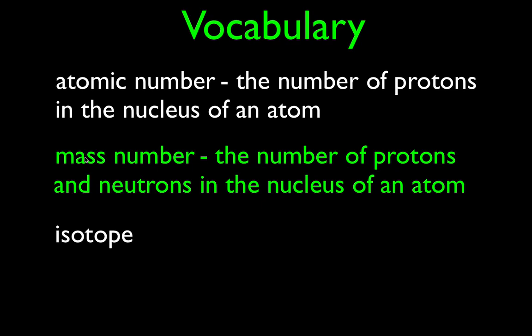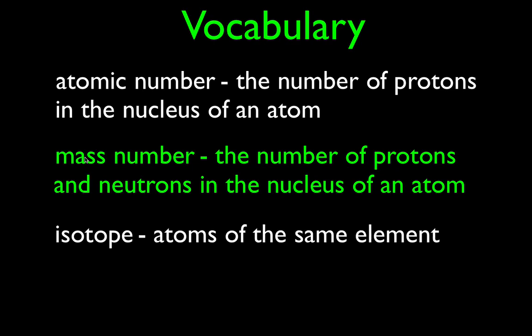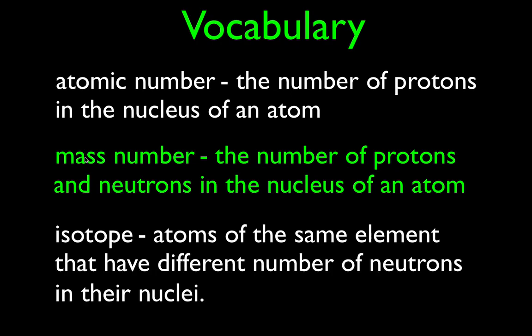Protons and neutrons are the things that have mass — that's what we add up to get the mass number. This video is ultimately about isotopes, and therefore we have to know what an isotope is. Isotopes are atoms of the same element that have the same number of protons but different numbers of neutrons in their nuclei. In the previous video, we talked about magnesium. Because magnesium is element number 12, every atom of magnesium has 12 protons in its nucleus, but some of them have different numbers of neutrons — some have 12, some have 13, and some have 14 neutrons.